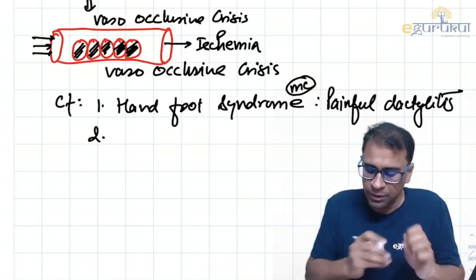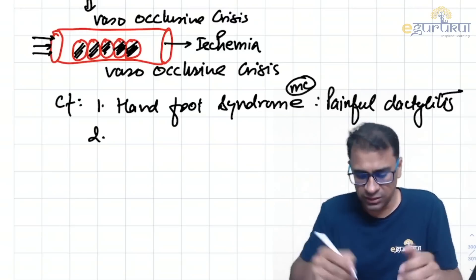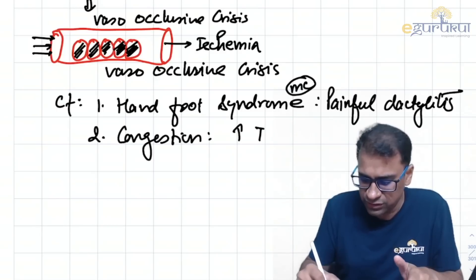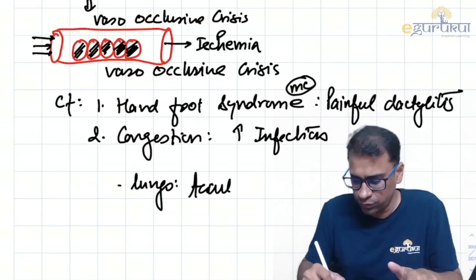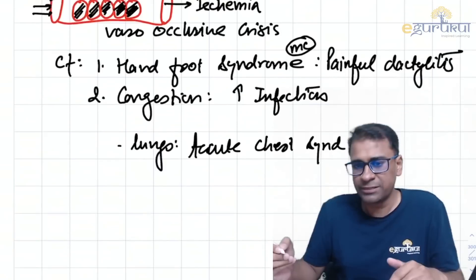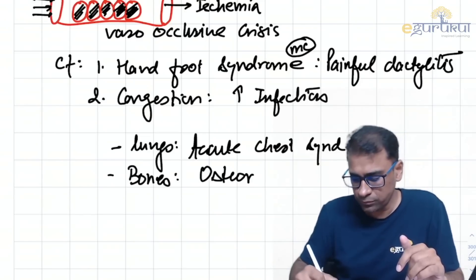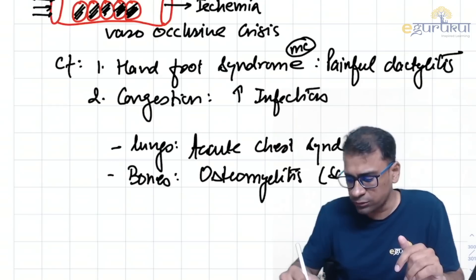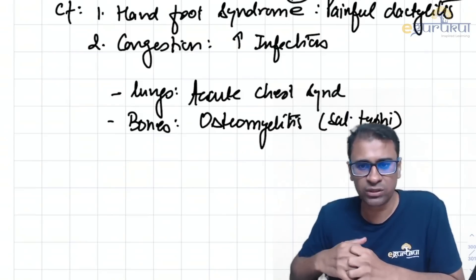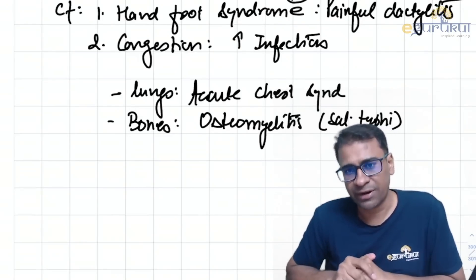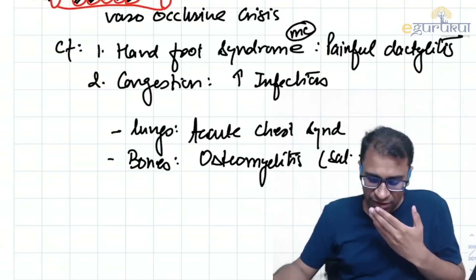Because of reduced blood flow, bacterial infections also increase. Infection can occur in the lungs — called acute chest syndrome — with pneumonia especially caused by pneumococcus bacteria. Infection can also occur in the bones called osteomyelitis, which in sickle cell is caused by Salmonella typhi, in contrast to the usual osteomyelitis caused by Staph aureus. Both acute chest syndrome and osteomyelitis are very important findings.